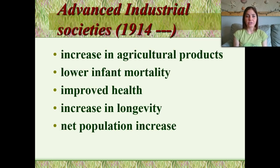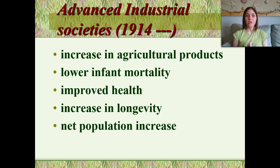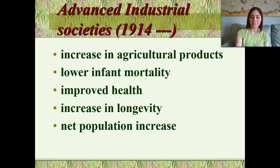We had our advanced industrial societies in the 1900s and onward. We had a huge increase in agricultural products, lower infant mortality rates, and a huge improvement in people's health. So again, our population started to increase drastically. Increase in longevity — meaning people are living much longer — and again we have a net increase in our population.